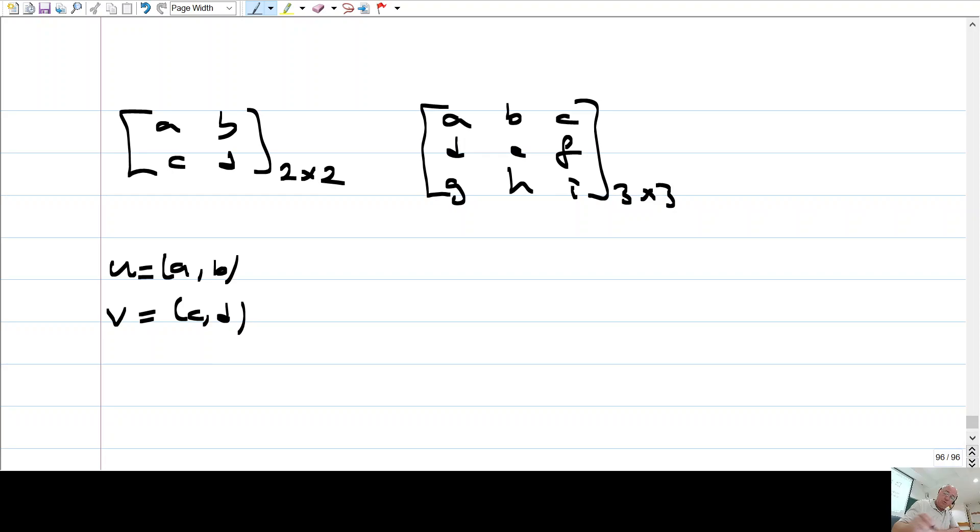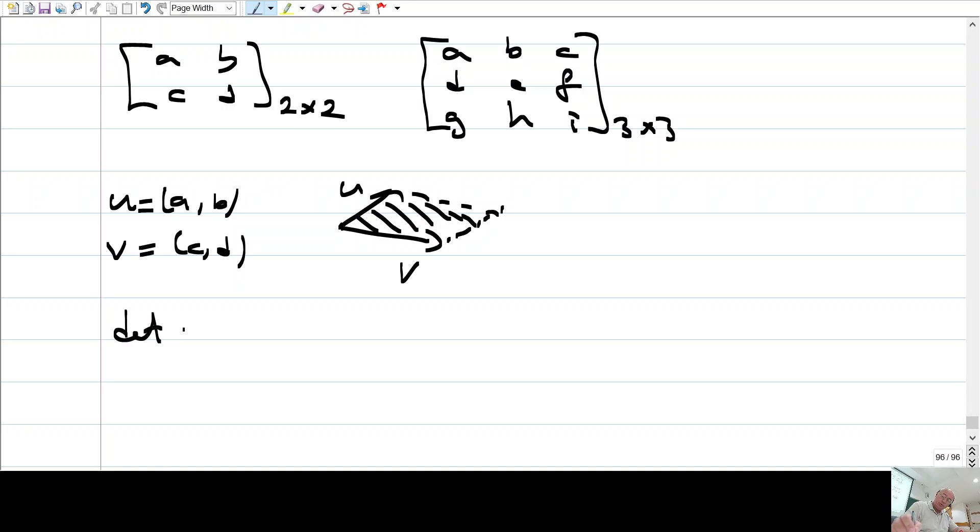If you do such an association, then determinant turns out to be this gadget. Suppose you have these two vectors, u and v, okay? Whenever you have two vectors in a plane, this determines a parallelogram. And this parallelogram has some area, okay? It turns out that the area of this parallelogram is the determinant of A.